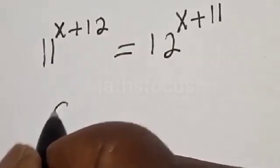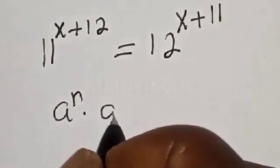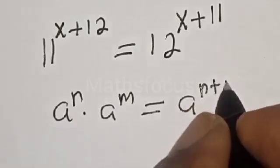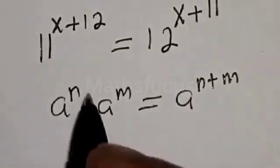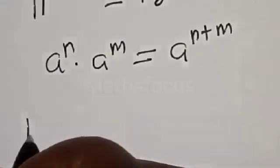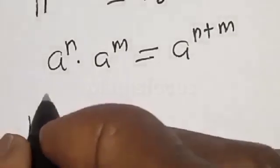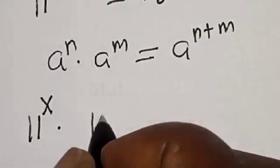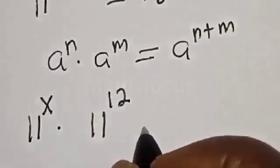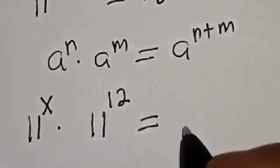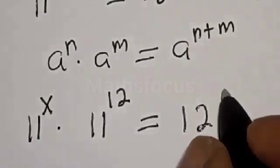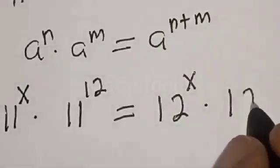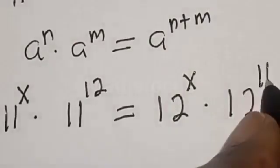Note that if you have a raised to power n multiplied by a raised to power m, this is equal to a raised to power n plus m. So this equation becomes 11 raised to power s multiplied by 11 raised to power 12, equal to 12 raised to power s multiplied by 12 raised to power 11.